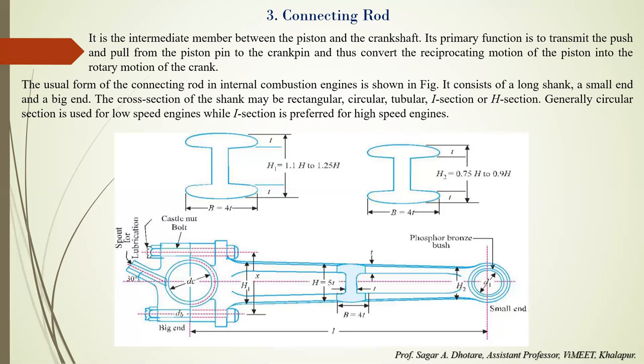The small end of the connecting rod is completely integrated with the body and carries the piston pin bearing. The connecting rod is connected to the piston through the small end with the help of the piston pin or gudgeon pin. The big end of the connecting rod is usually split into two segments to take the crank pin bearing shell. The connecting rod is connected to the crank through the big end with the help of the crank pin. The body tapers in shape from the small end to the big end, as seen in the figure.